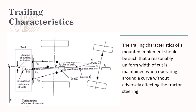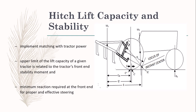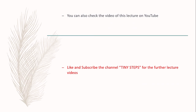The trailing characteristic means your implement can be trailed very easily to a different location. Then the hitch lift capacity — when you do not want your implement to work on the field and you want to lift it in the air, the tractor should not be destabilized, so this must be designed accordingly. This is all about today's lecture. In the next class we'll start with the next topic. If you want to see my previous videos or further lectures, please subscribe to the Tiny Step channel. Thank you and take care.